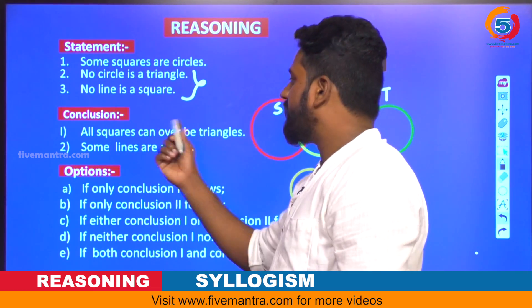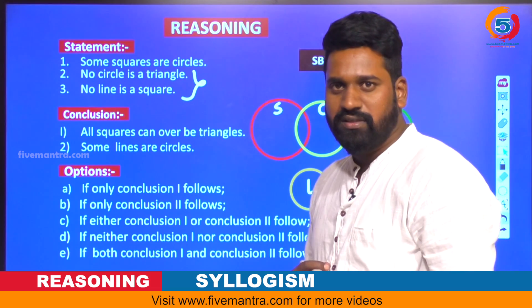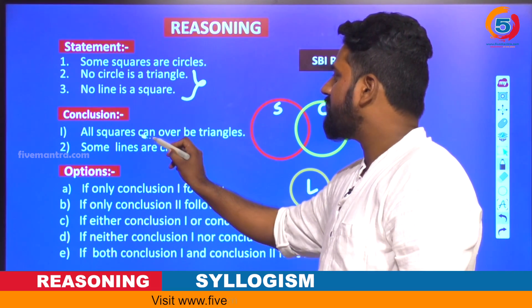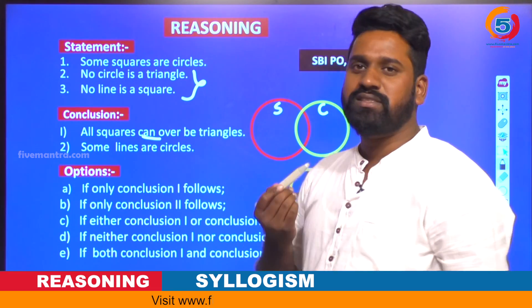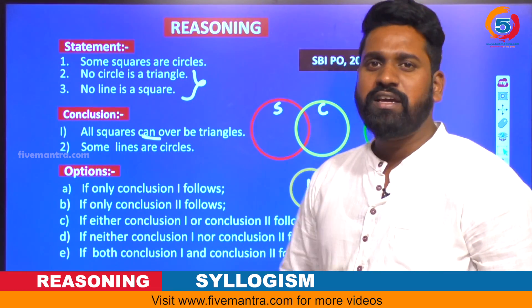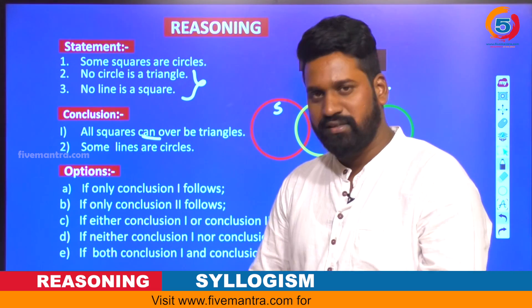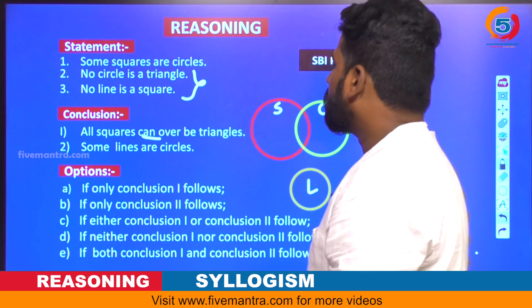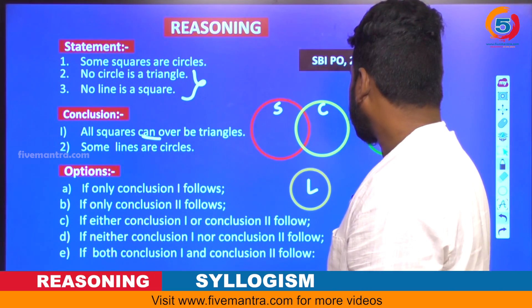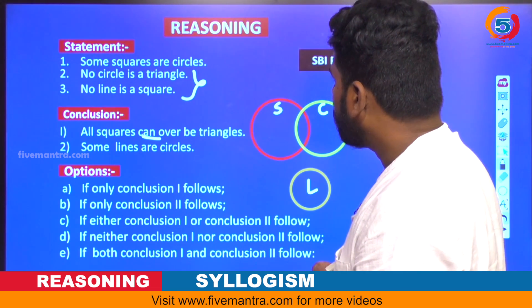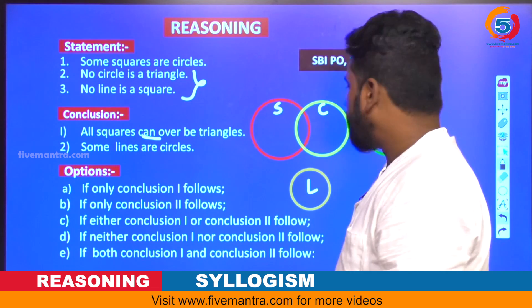Coming to the conclusions, the first conclusion given is: all squares can be triangles. The word 'can' indicates a possibility. So all squares being triangles is a possibility. Now you have to observe — is it a definite conclusion or not? All squares being triangles — is it possible?